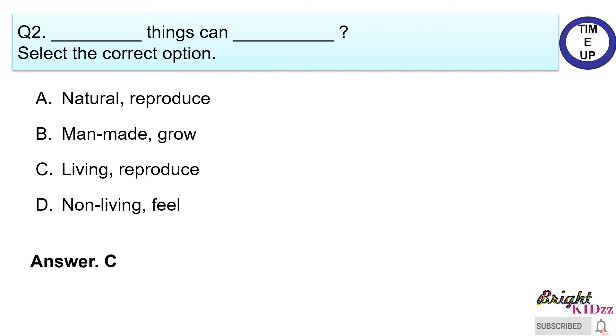Answer C. Living things can reproduce. Natural and man-made things are types of non-living things.